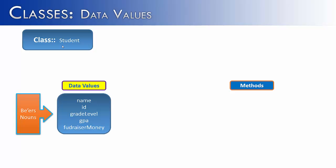The data values are the beers of a class, and what I mean by that is they represent something, they don't do something. They exist, they don't perform an action. They're like nouns in the English language. So we have name, ID, grade level, GPA and fundraiser money. All of these represent some kind of value inside of the class.